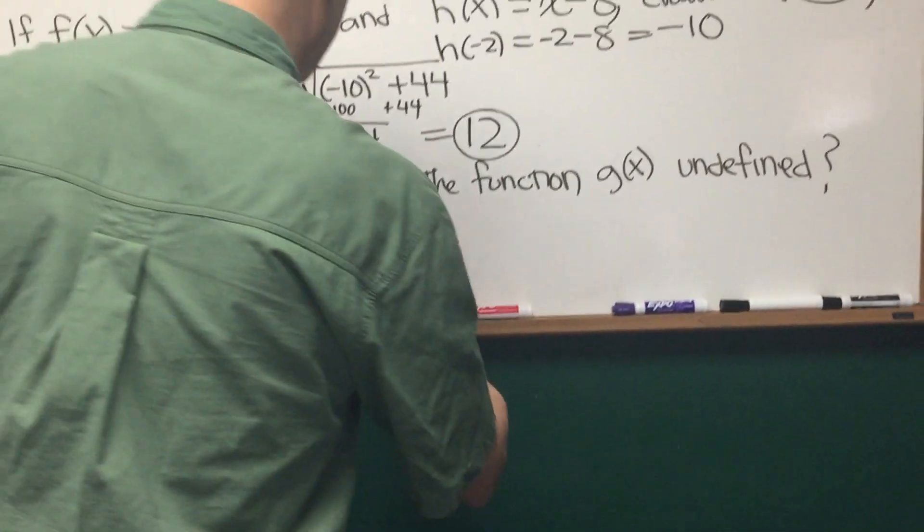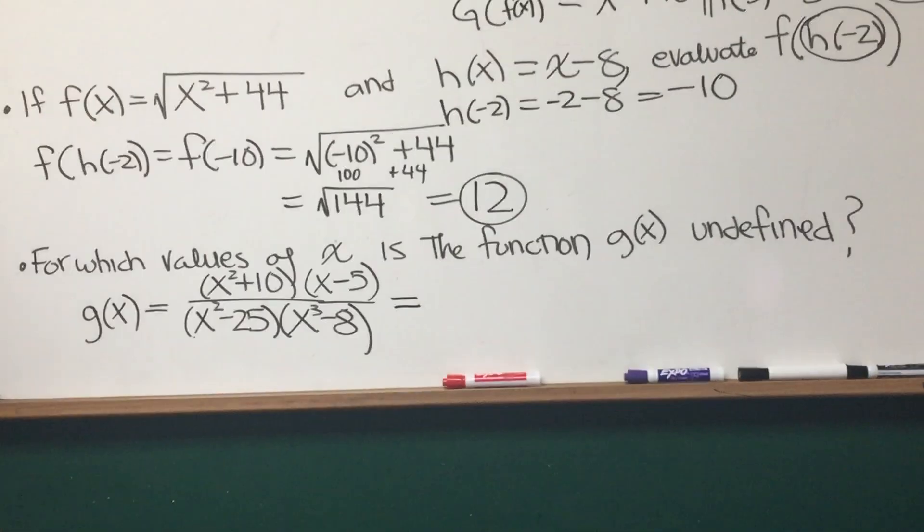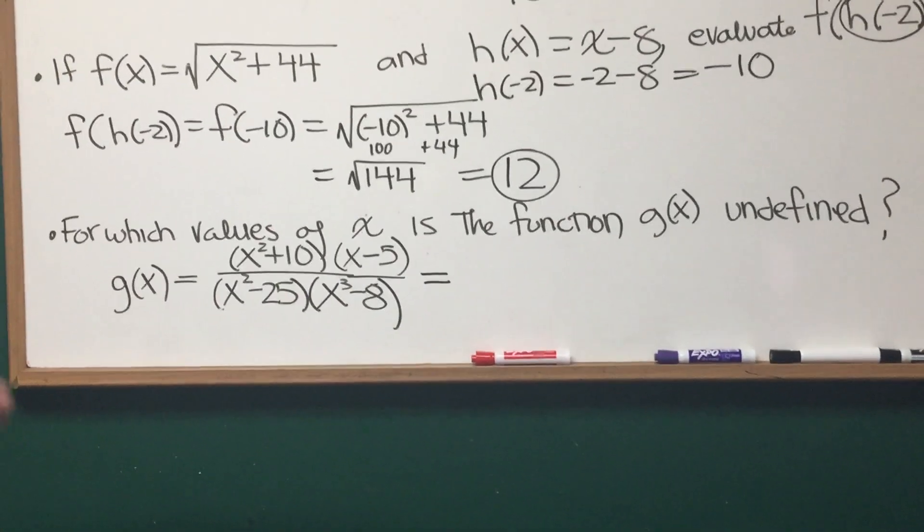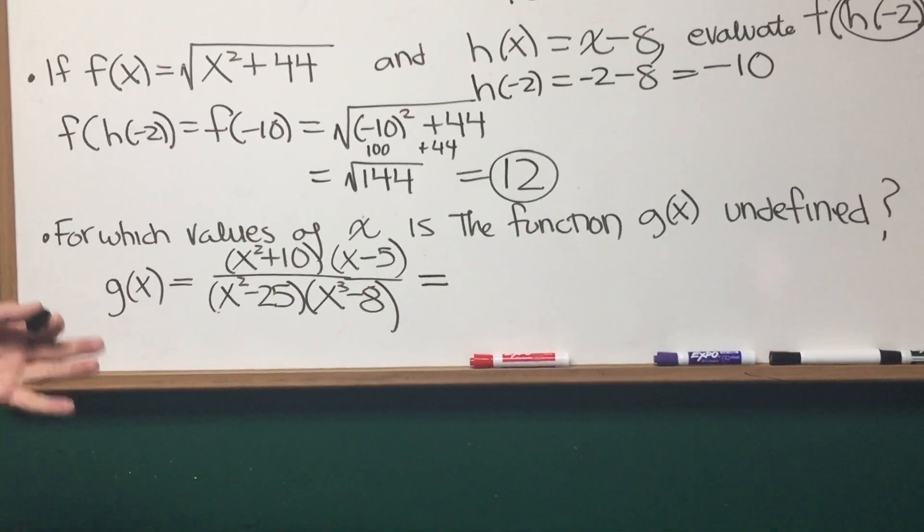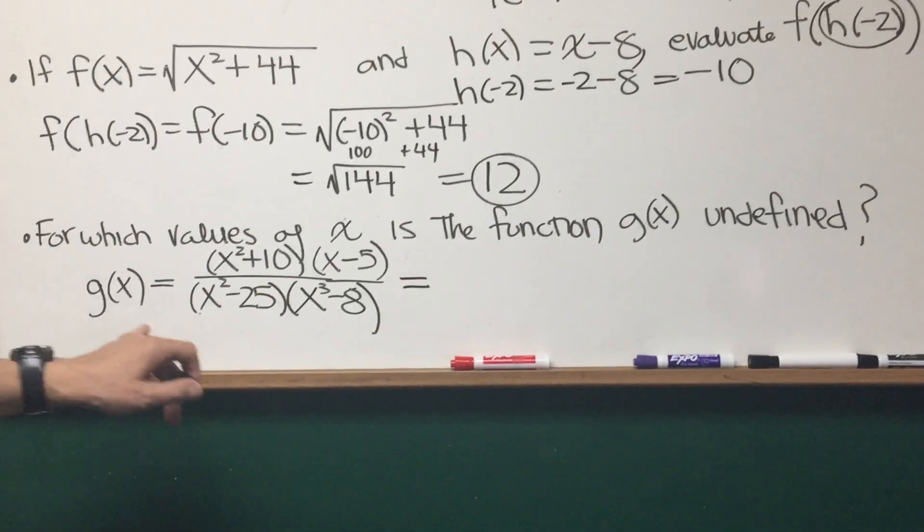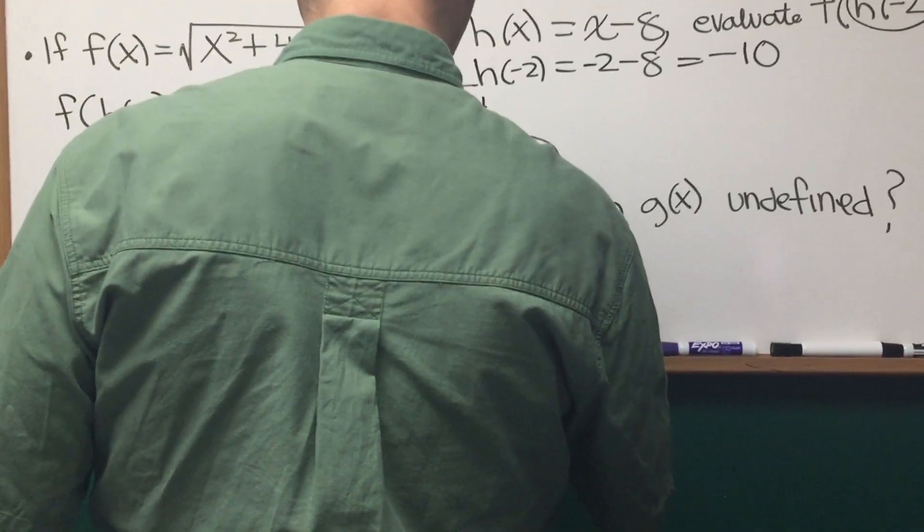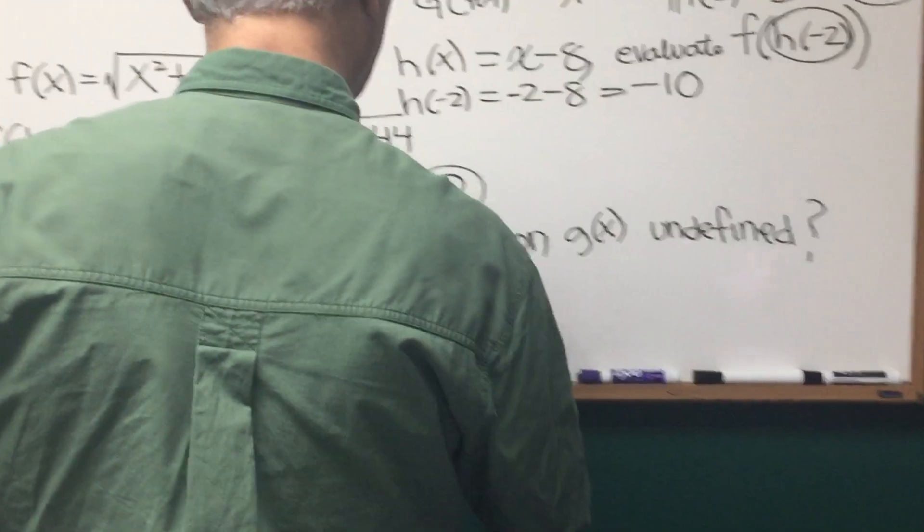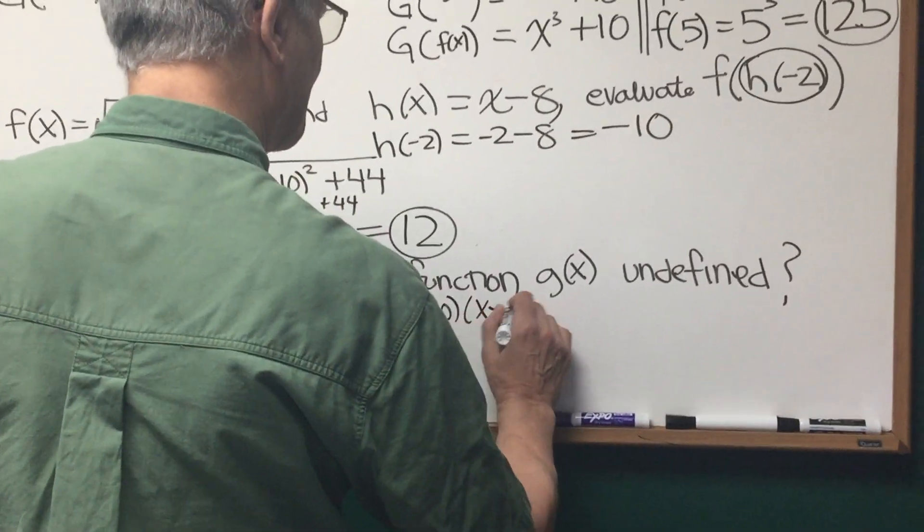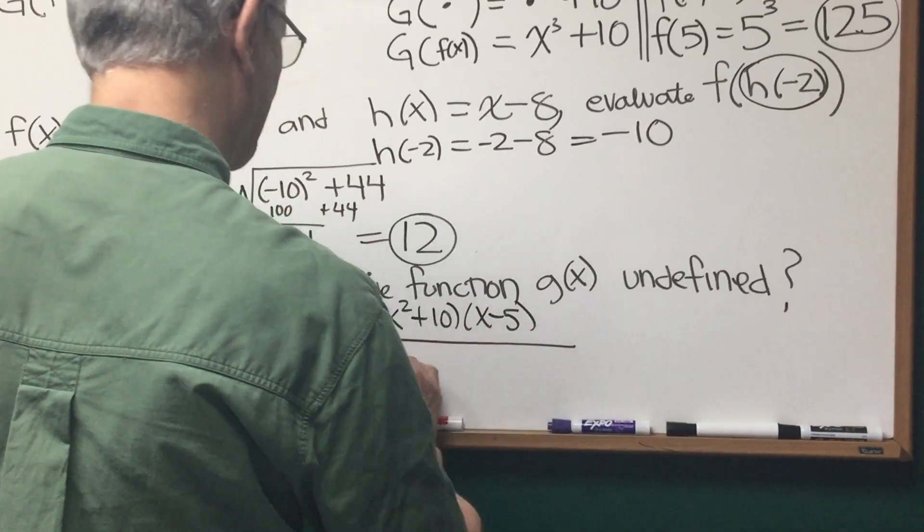How do we deal with this rational function? Well, I know that the function is undefined wherever I have 0 in the denominator. So, I look at this expression and I can see that the denominator can be factored. Let's take a look at that. The denominator can be factored.